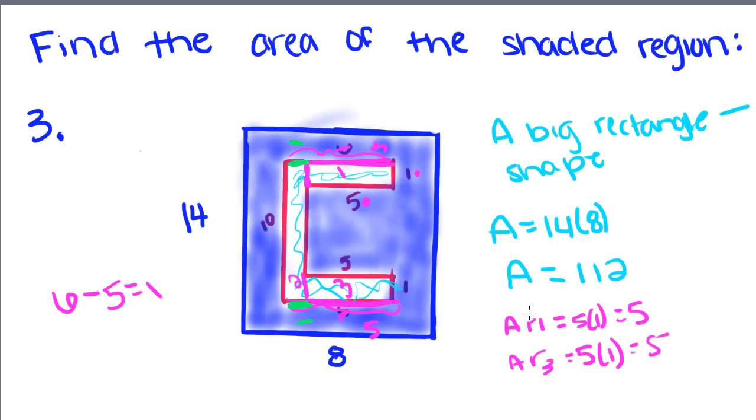And we would do the same thing over here to get 1 over here. So for this rectangle, the area of rectangle 2 is equal to 10 times 1, which is 10.